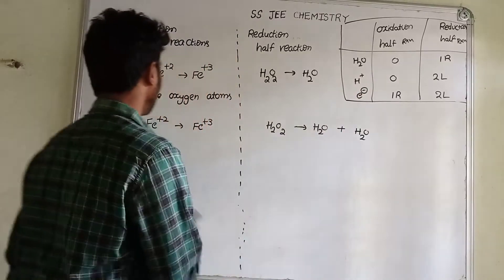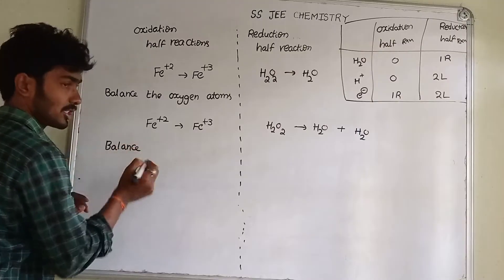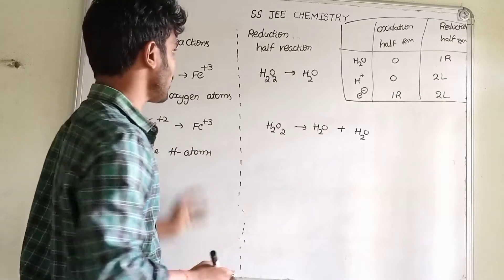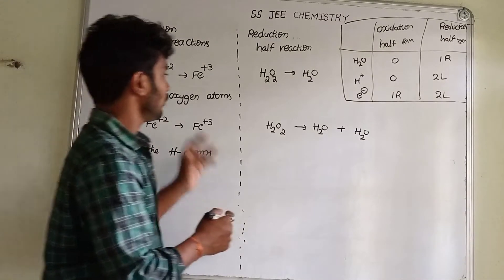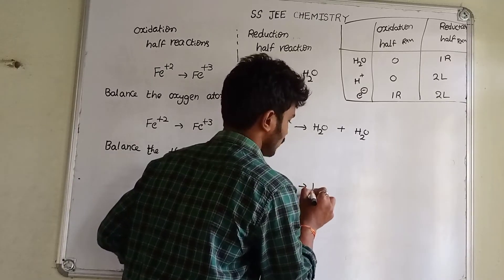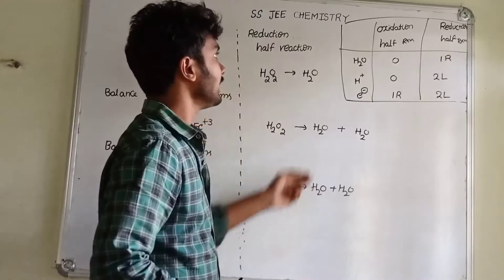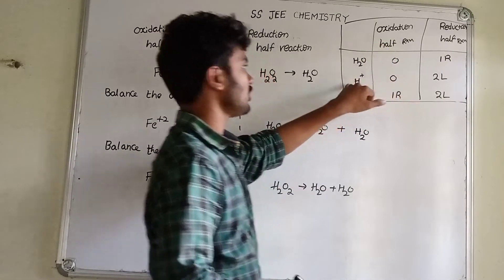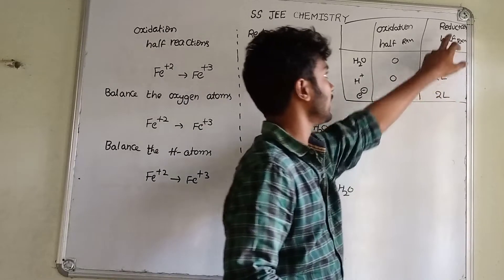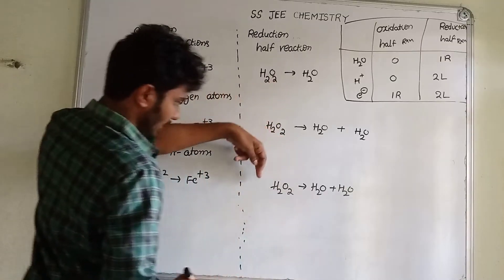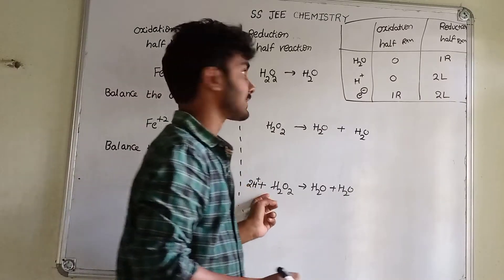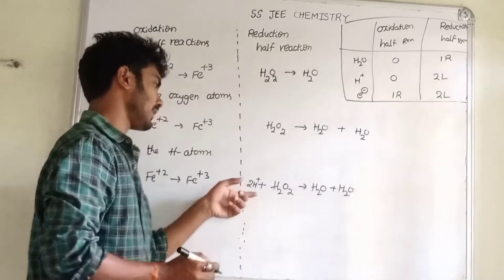Balance the oxygen atoms. Next, balance the hydrogen atoms. Add hydrogen atoms. For the reduction reaction, on the left side, we add 2H⁺. So 2H⁺ — in acidic medium. In the question the medium is acidic, so we add 2H⁺.